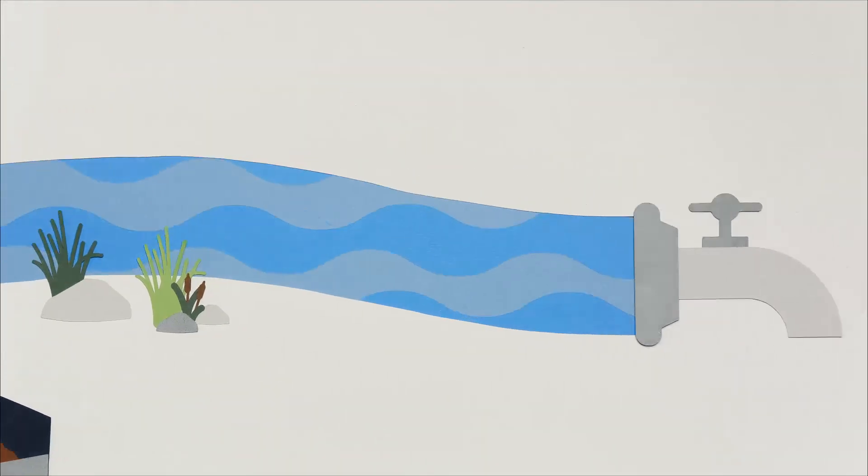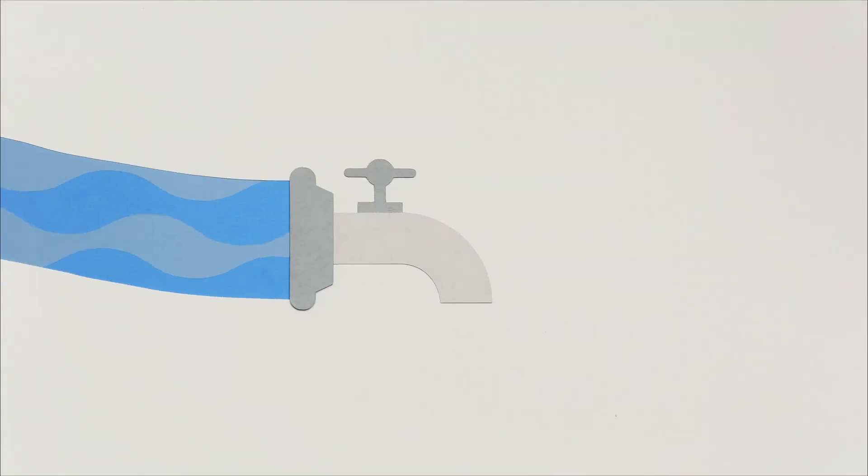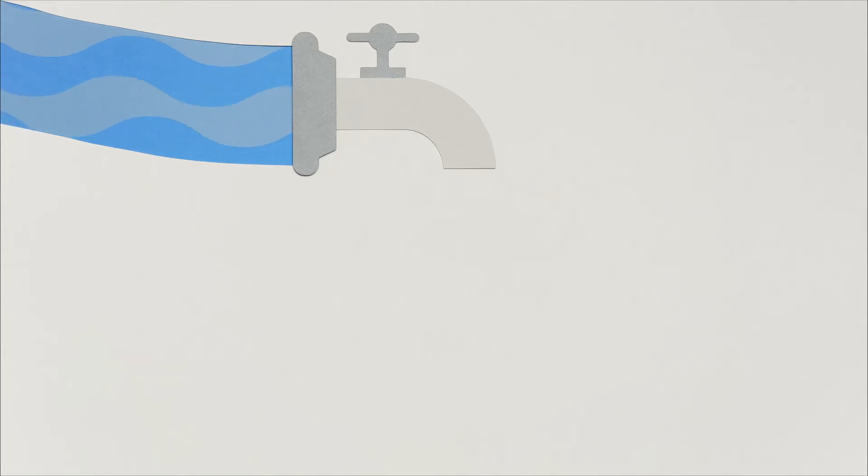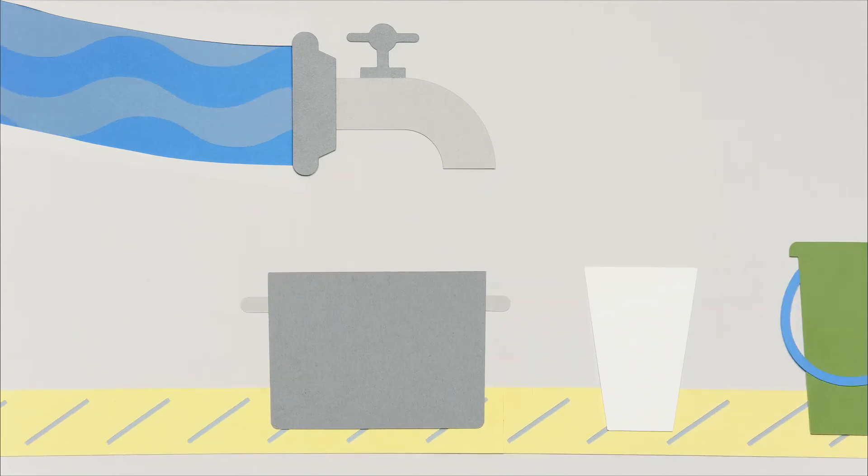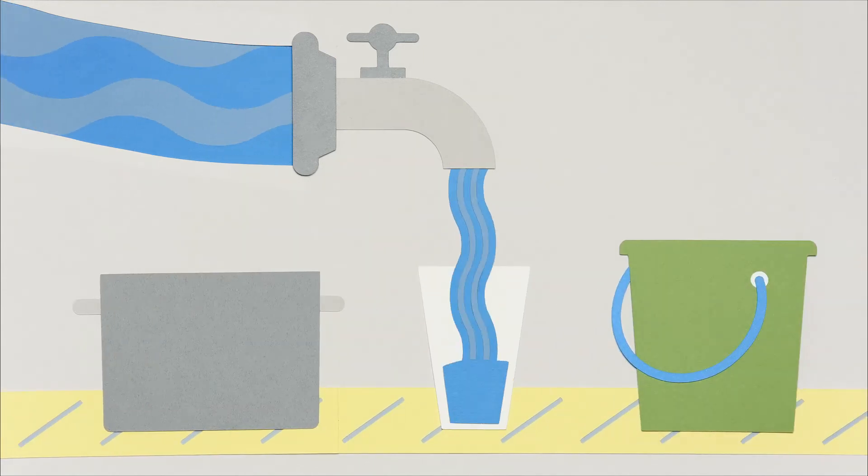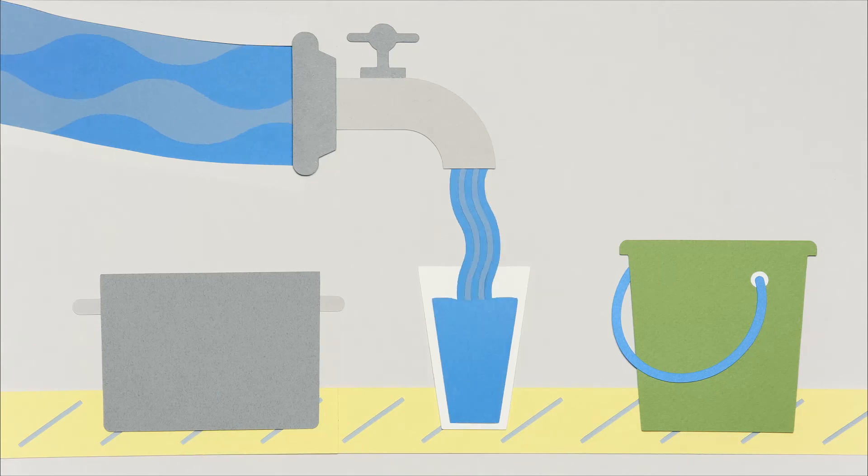These and countless other changes made by the agriculture sector have benefited all other water users in the nexus. Municipalities, for example, take water from the Bow River, treat it, and then send it to households to be used for activities such as drinking, washing, and cooking.